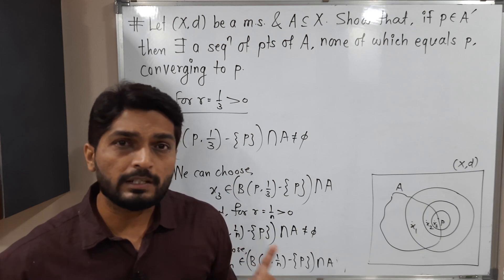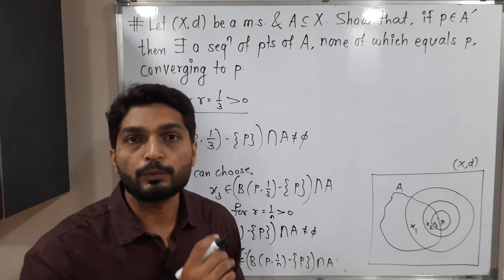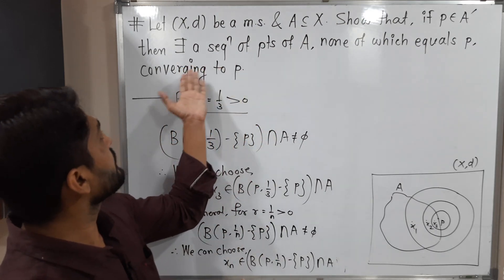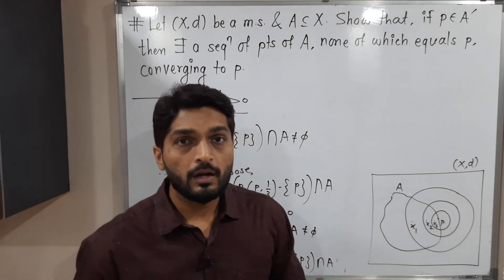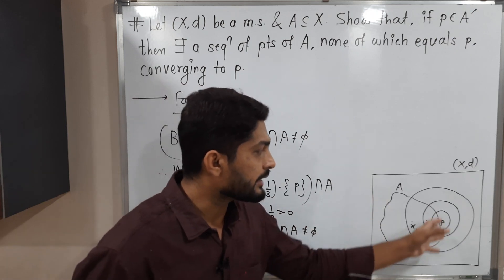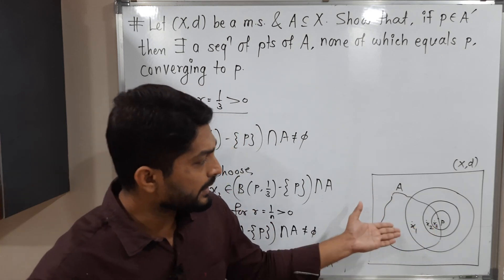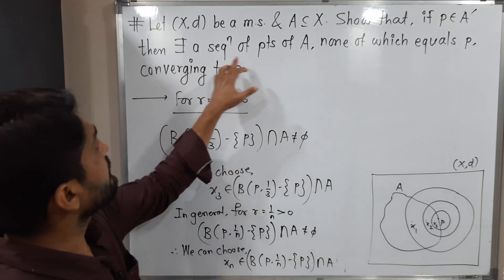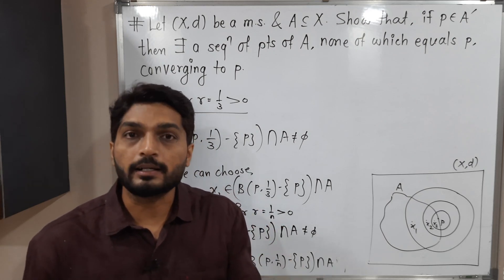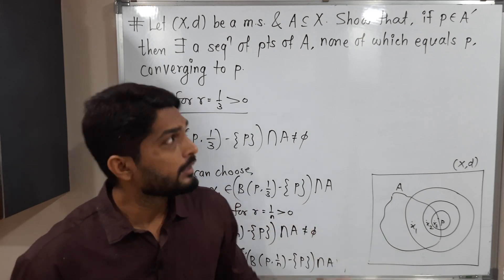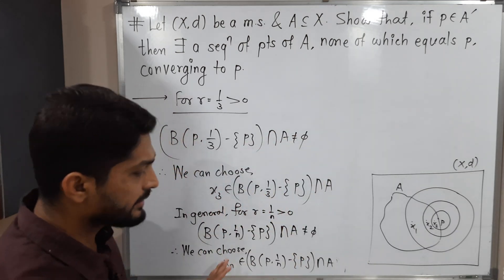Did you notice one thing by observing this diagram? All these points are moving towards P. And that is exactly what we want — we are in search of a sequence which is converging to P. All terms of the sequence are from set A, since the sequence points come from the intersection, which is contained in A. Also, each time we are removing the center of the ball, that is singleton {P}, so no point will be equal to P. So none of which equals P. All conditions get satisfied.